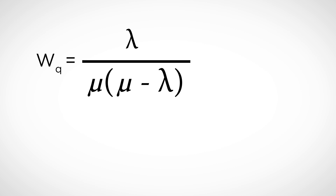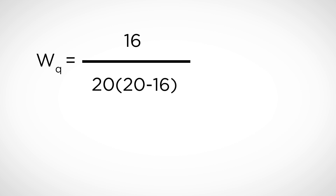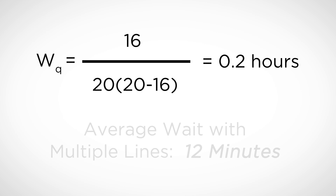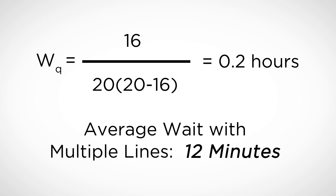The average amount of time a customer has to wait at the MM1Q is given by the arrival rate divided by the service rate times the service rate minus the arrival rate. With an arrival rate of 16 customers per hour to each cashier and a service rate of 20 customers per hour, this translates into each customer having to wait on average one-fifth of an hour, or 12 minutes.